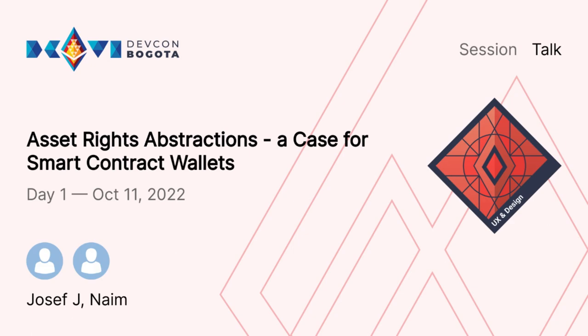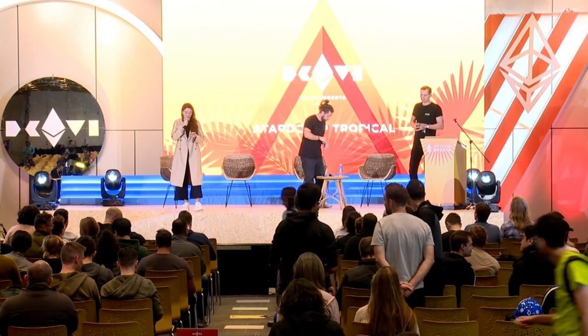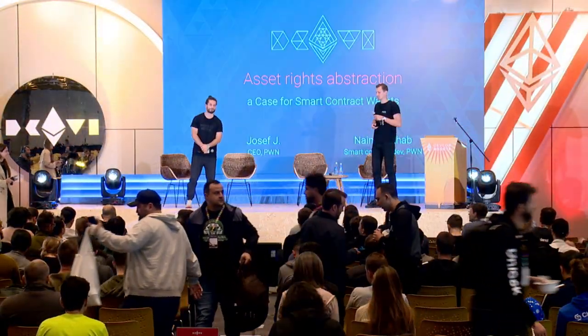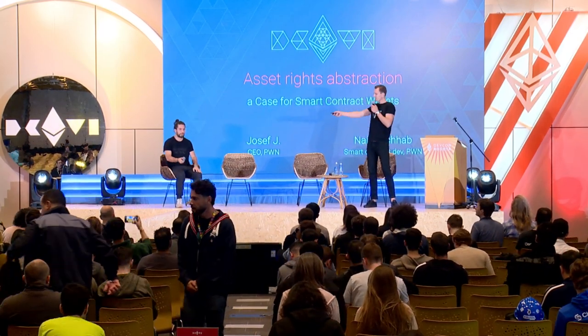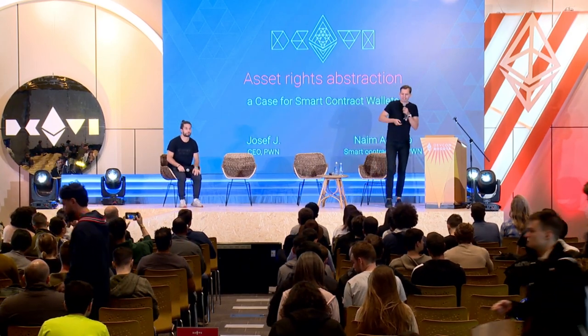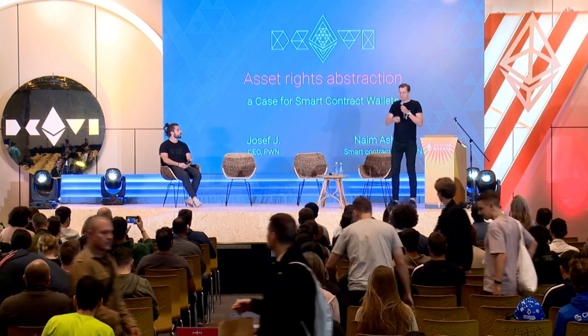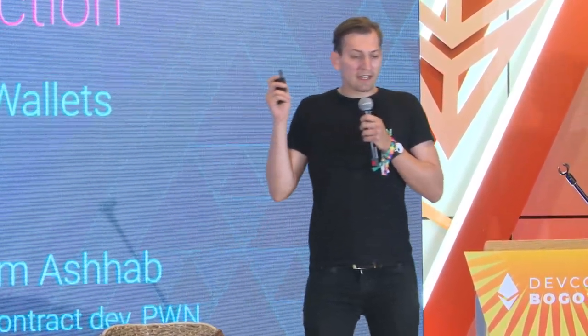We are with Joseph and Naim, and they are going to share about asset-right abstractions, a case for smart contract wallets. My name is Joseph. This is Naim. We are from a project called Pawn, and today we are not going to talk about Pawn, but about something that we developed for the community because it's important to us and to our cause. We are going to talk about asset-right abstraction, our case for smart contract wallets.